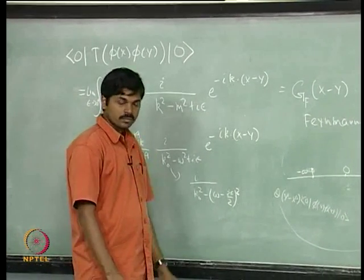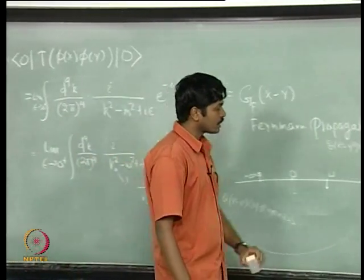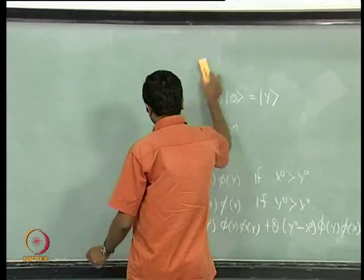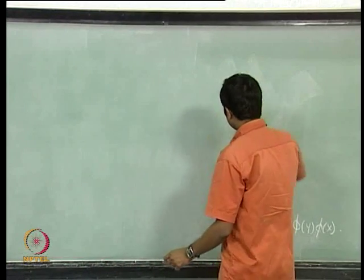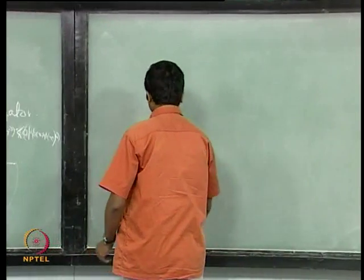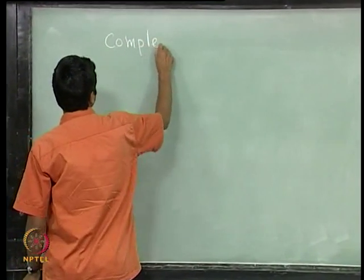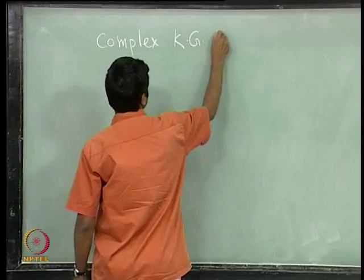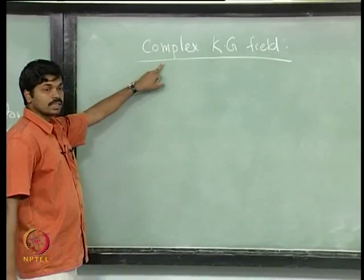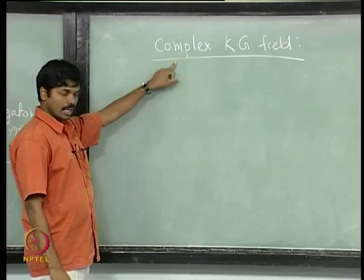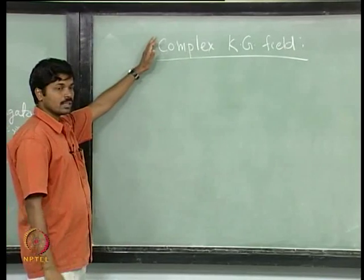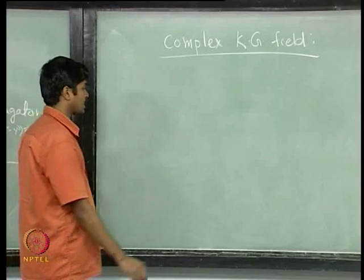With this, we will close our discussion on the real Klein-Gordon field. We can now discuss the complex Klein-Gordon field. Most of the analysis in this case is quite similar to the real case, so I will omit most of the steps and summarize the main results in the quantization of a complex Klein-Gordon field.